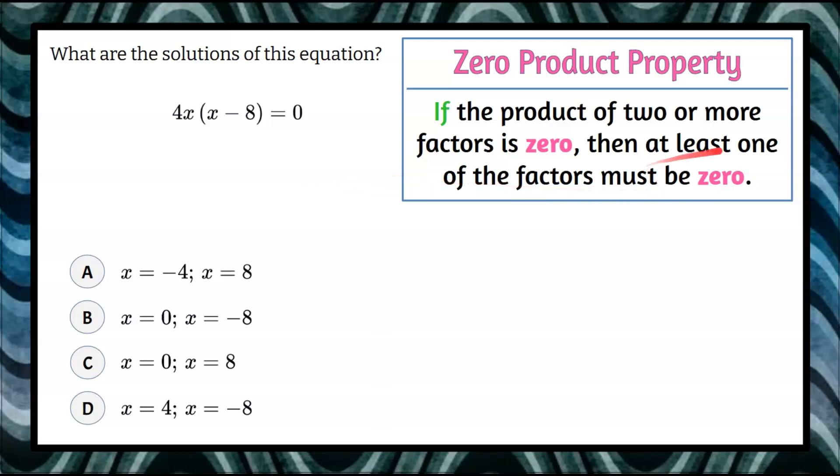So at least one factor must be 0. Either the first factor, 4x, must equal 0, or the second factor, x minus 8,